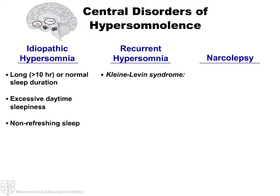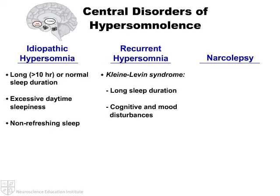Klein-Levin syndrome is the most common form of recurrent hypersomnia. This rare disorder mostly affects adolescent boys and is characterized by bouts of hypersomnolence coupled with cognitive and mood disturbances, compulsive eating, hypersexuality, and disinhibited behavior.